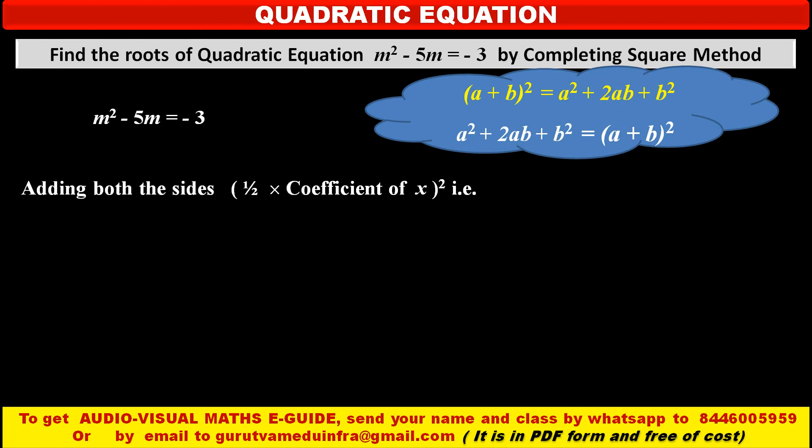In this equation on the left hand side we have two terms. So we have to add one more third term, suitable term, so that we will get whole square here. Now to find out that third term we have one formula, half into coefficient of x whole square.